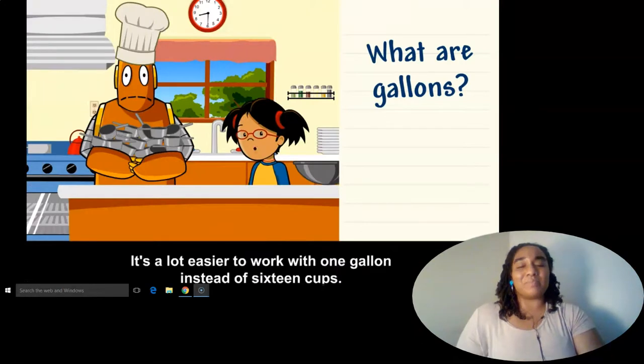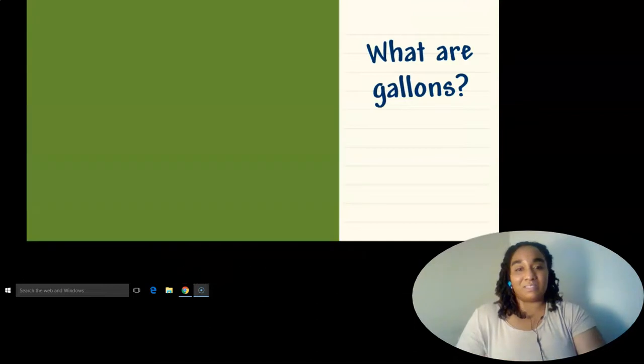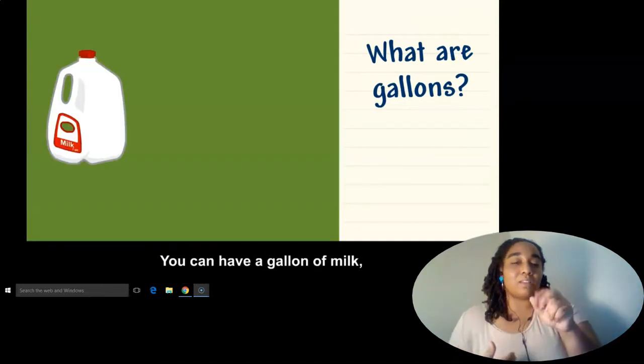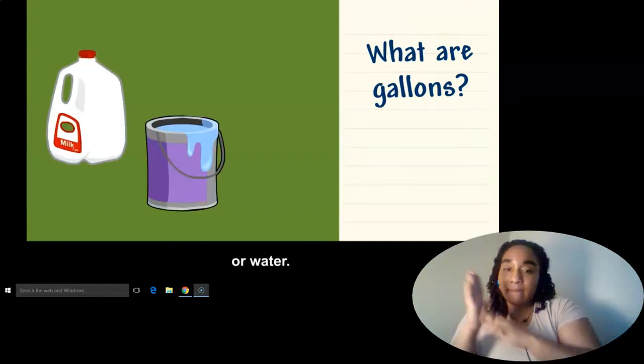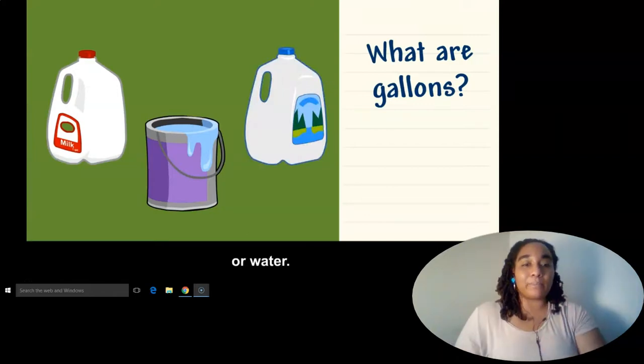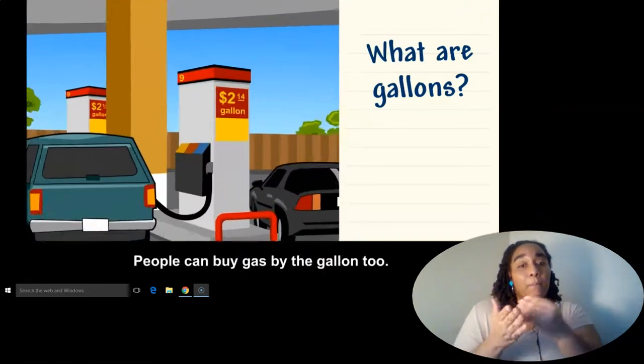It's a lot easier to work with one gallon instead of 16 cups. You can have a gallon of milk, paint, or water. People can buy gas by the gallon, too.